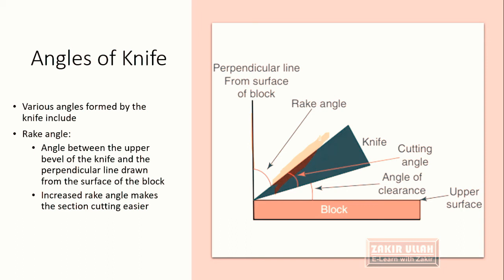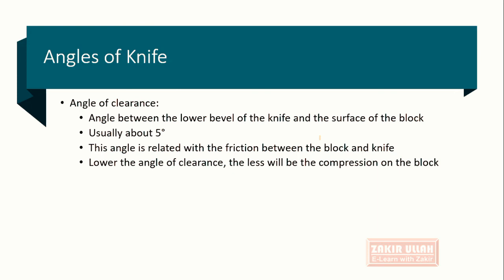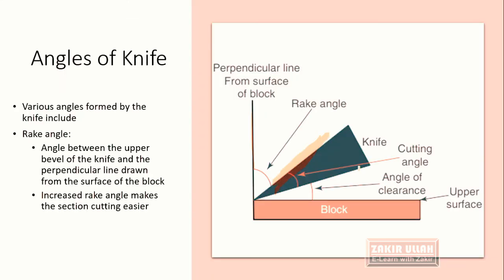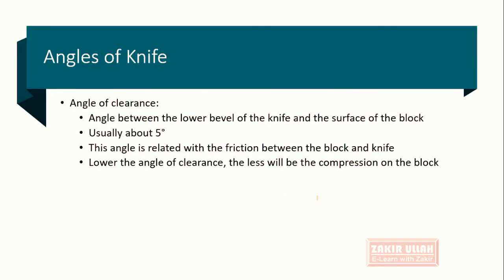When the rake angle is increased, preparation of tissue sections is made easier. Another type of angle is the clearance angle, which is the angle between the lower bevel of the knife and the surface of the block. This angle is usually about 5 degrees and is related to friction between the block and the knife.